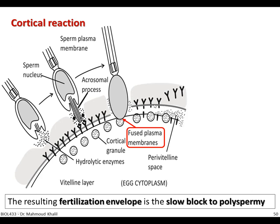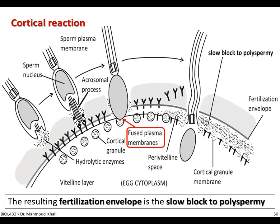This membrane is called the vitelline membrane. Now a region of space appears between the vitelline membrane and the egg cytoplasm, termed the perivitelline space. Soon after, the nucleus or head of the sperm is internalized, and the cortical granules are released into the perivitelline space. The vitelline membrane is now changed to become the fertilization membrane. The thickness of this layer stops further entry of other sperm. This resulting fertilization envelope represents the slow block to polyspermy.